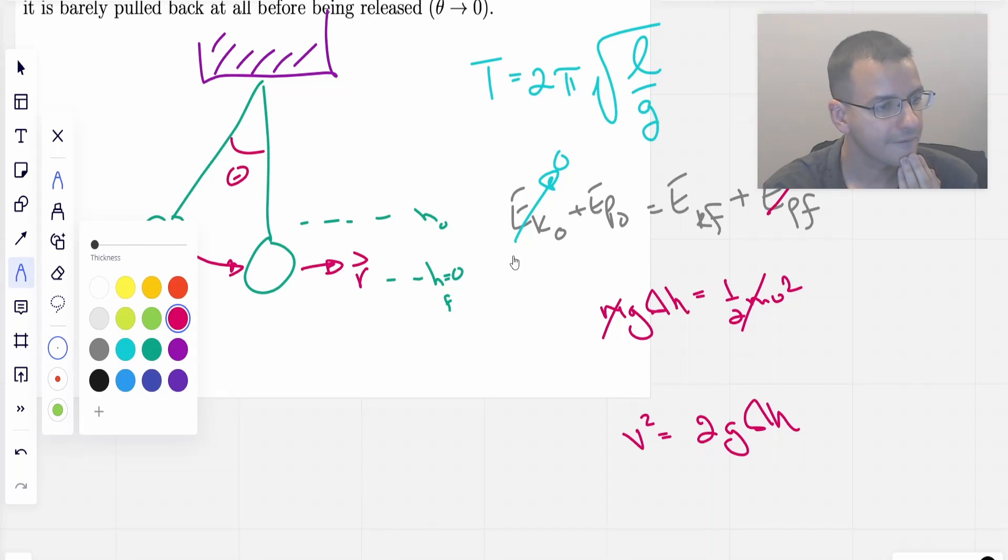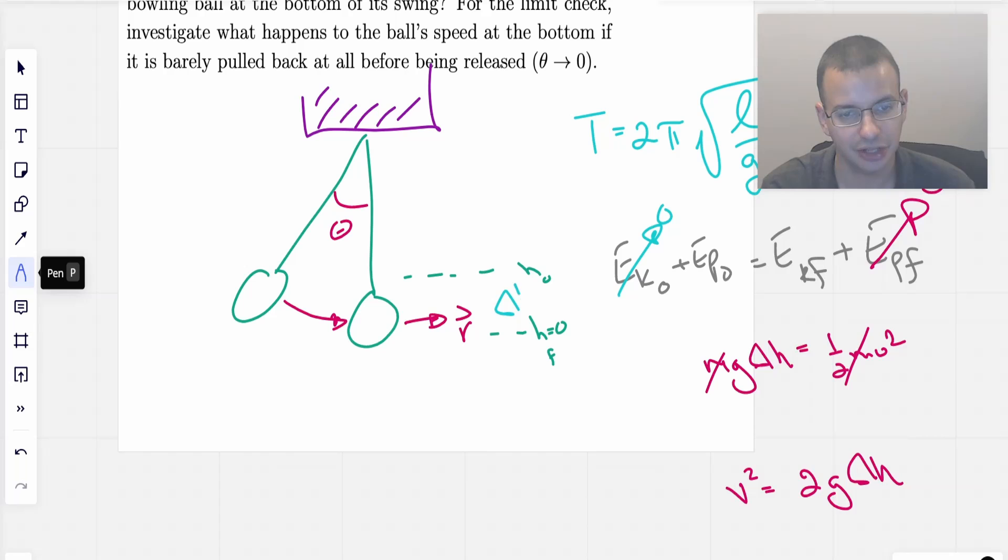And we get velocity squared equals 2G delta H. Okay. So that works. Now, so what we need to do then is we need to find this delta H.